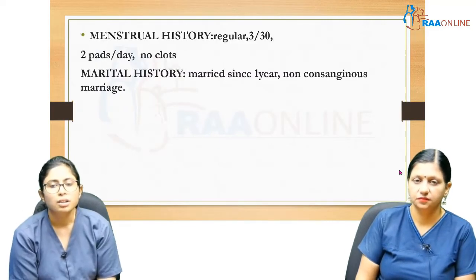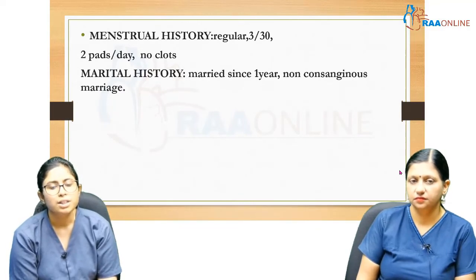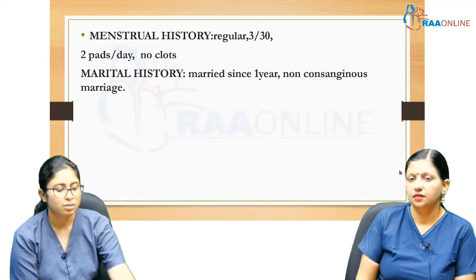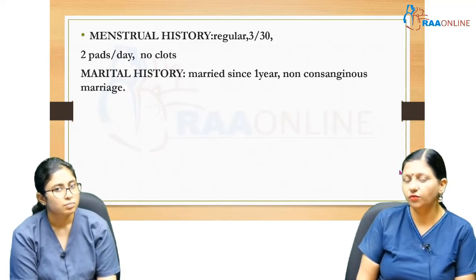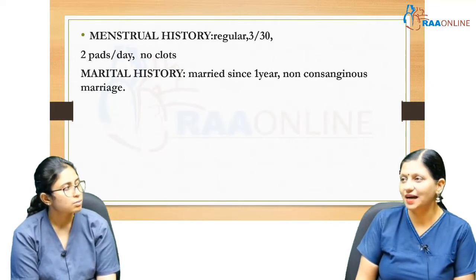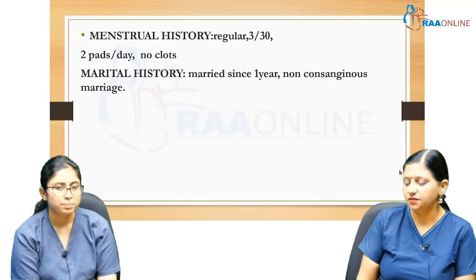Menstrual history: she has a regular menstrual cycle, 3 days of bleeding out of a 30-day cycle, changing 2 pads per day, not associated with clots. Marital history: married for one year, non-consanguineous marriage. If someone has a 30-day cycle, how will you calculate the EDD? Since 28 days is normal, you will add 2 days to the EDD.